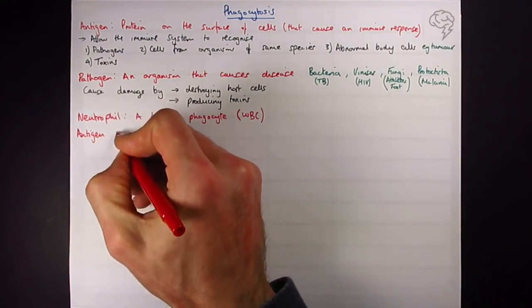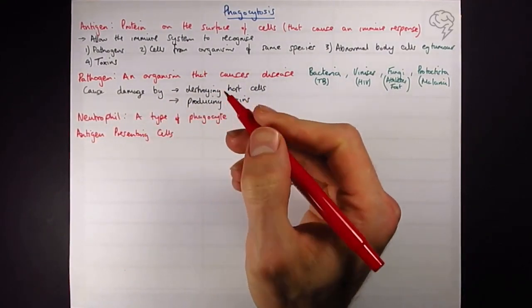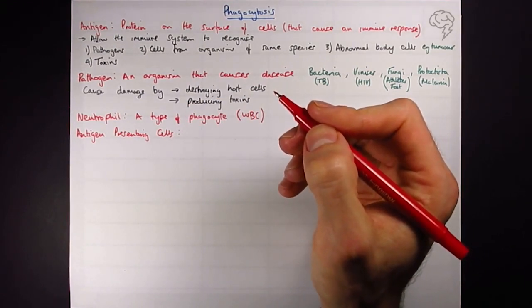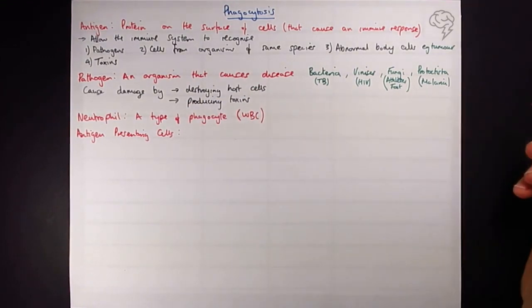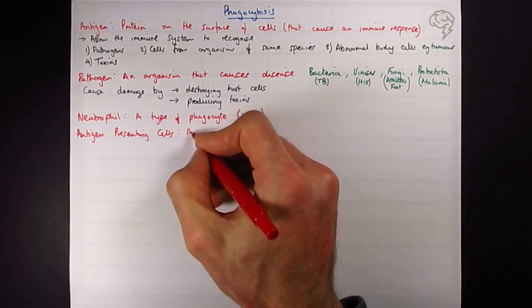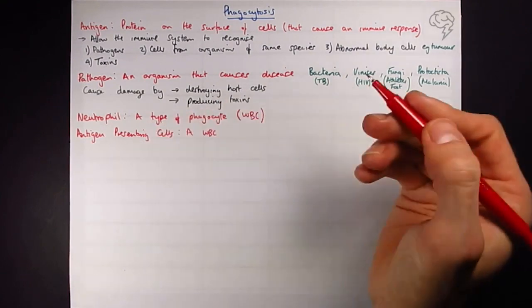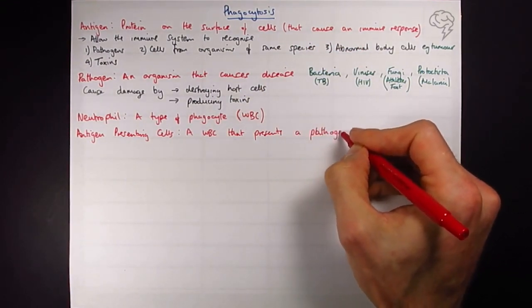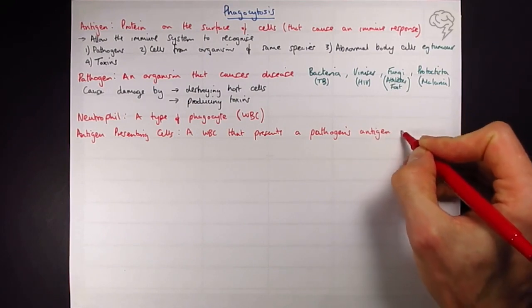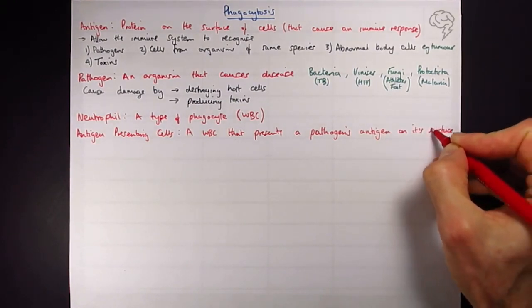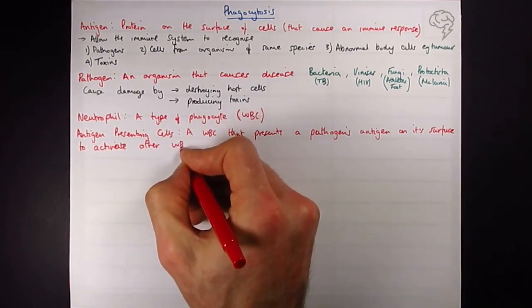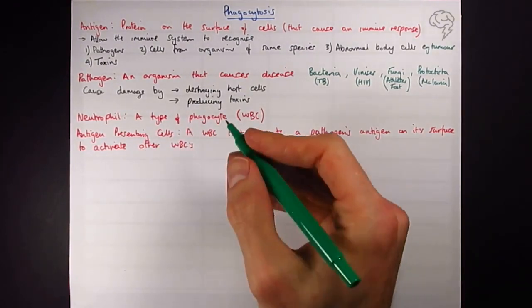We can also call neutrophils or phagocytes antigen presenting cells. Sometimes called APCs. I haven't seen it in exam papers so I'm not going to write it down. A white blood cell that presents the pathogen's antigen on its surface. So it steals the antigen from the pathogen, puts it on its own cell surface membrane, and this is going to activate more of the immune response. It's an example of cell signaling. I'm going to say to activate other white blood cells, and the example will be a phagocyte or a neutrophil.